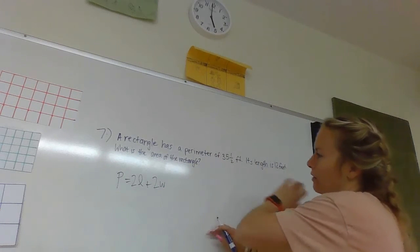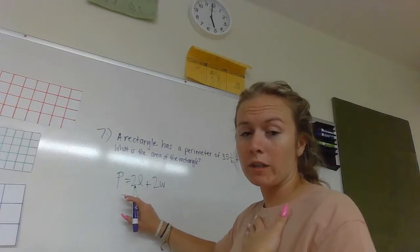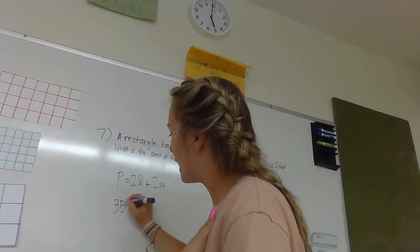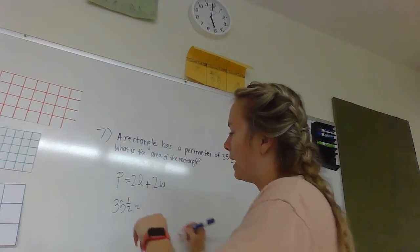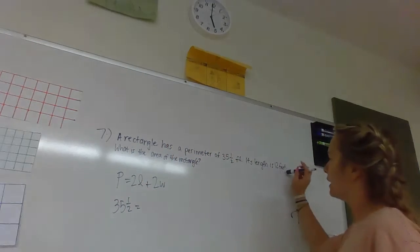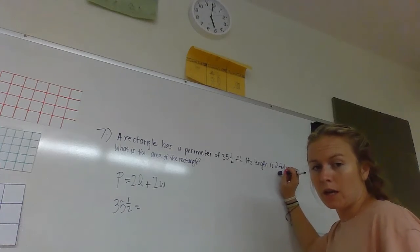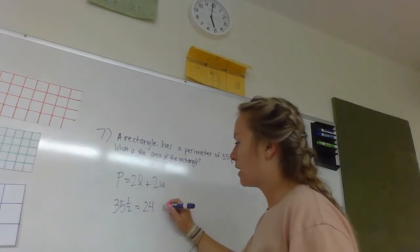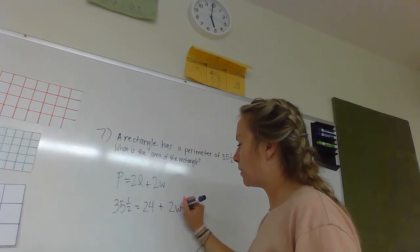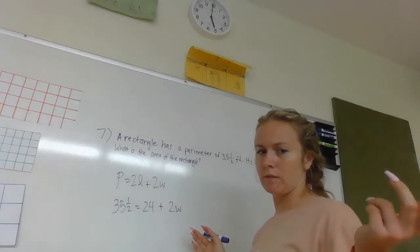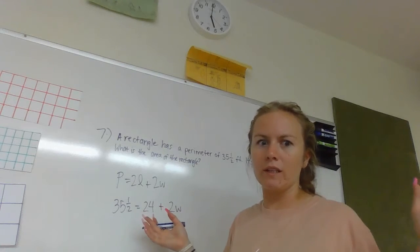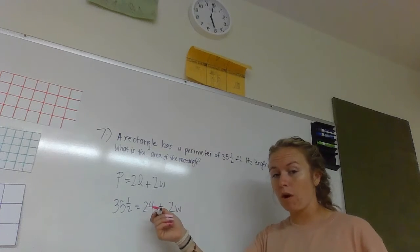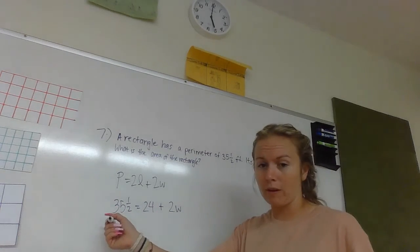Okay, so now we know that the perimeter is 35 and a half feet, so I'm going to plug in the things that I do know. So 35 and a half feet for the perimeter equals two lengths. Now we know the length is 12, so if we multiply that by 2 it would be 24 plus 2W. We don't know what the width is, so to find that out we need to subtract 24 from the perimeter that we do know.